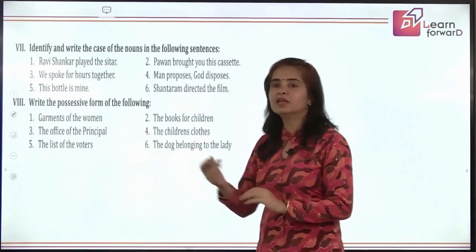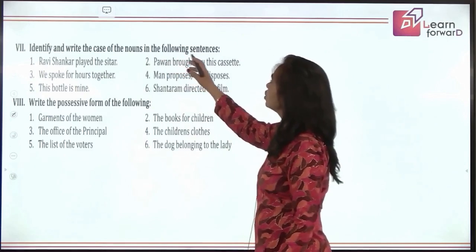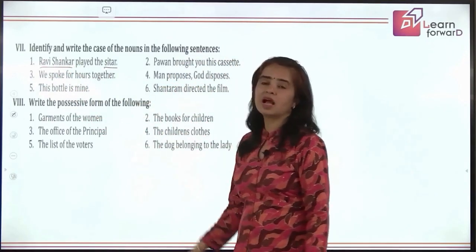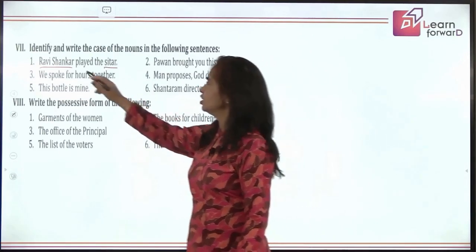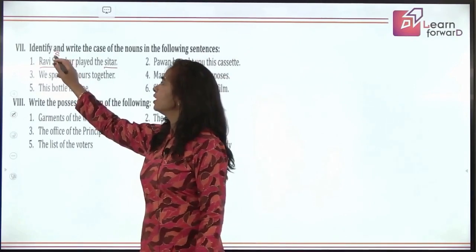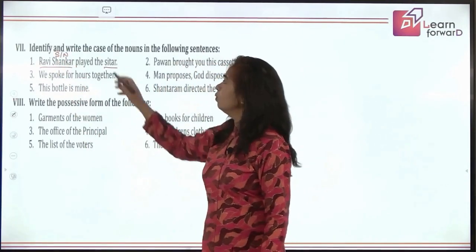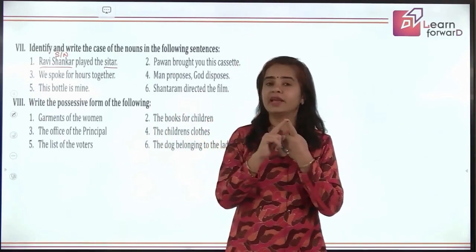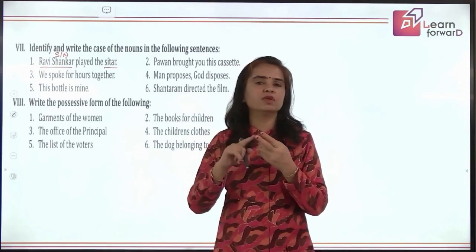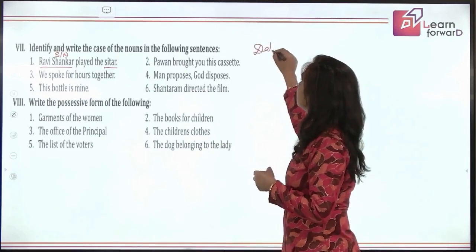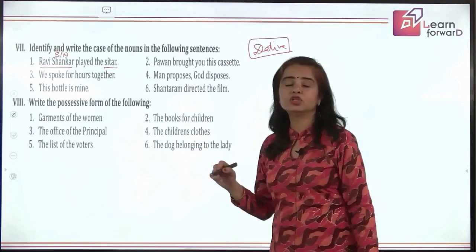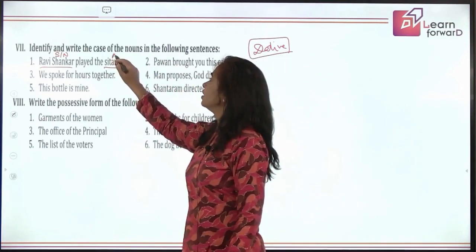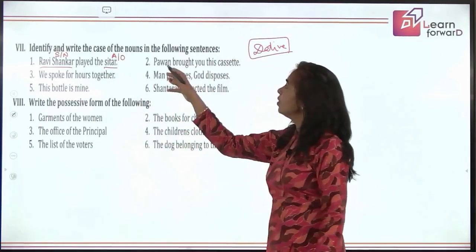Let's do an exercise: identify and write the case of nouns in the following sentences. 'Ravi Shankar played the sitar.' Ravi Shankar is used as the subject — so this is the subjective or nominative case. 'Sitar' is the object. Is it a direct or indirect object? A direct object answers 'what' — what did he play? The sitar. So 'sitar' is in the objective or accusative case.